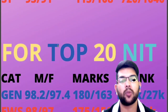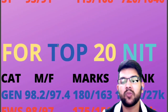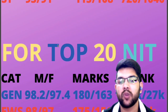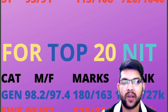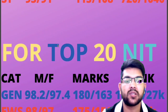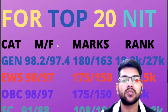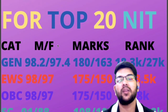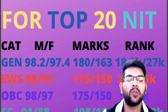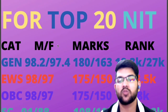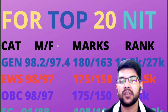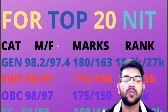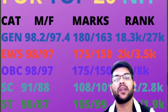For top 20 NIT, the information is as follows. For general candidates, percentile requirement is 98.2 for male and 97.4 for female, marks will be 180 and 163, and CRL rank will be 18,300 and 27,000. For EWS, percentile is 98 and 97, marks 175 and 150, and EWS category rank will be 2,000 and 3,500. For OBC, 98 and 97 percentile again, similar marks, and OBC category rank will be 5,000 and 8,000.